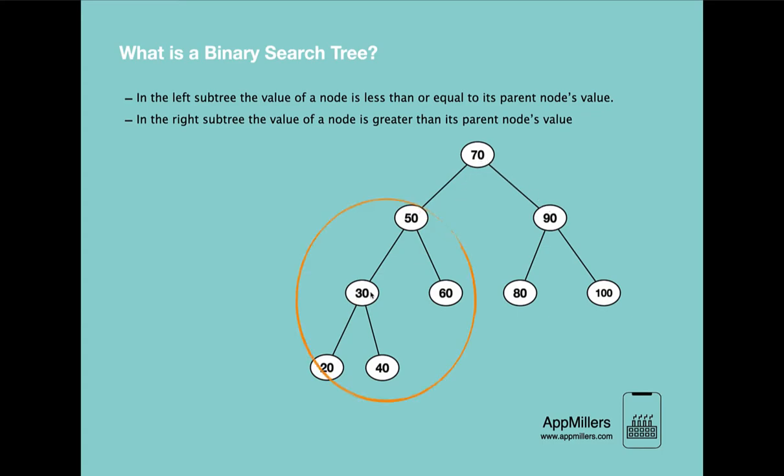If you continue to the left subtree we can see that the root is 50 and in the left node we have 30 which is less than this root node and on the right subtree we have 60 which is greater than this root node. And it continues like this till the end. Here we have root node which is 30 and as a left node we have 20 which is less than 30 and as a right node we have 40 which is more than 30.